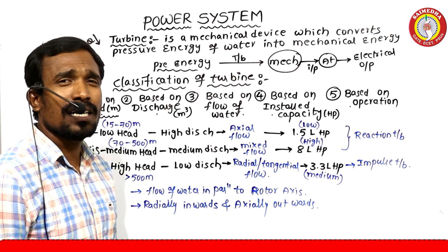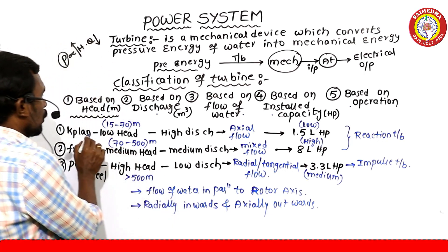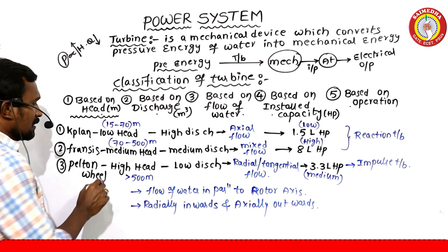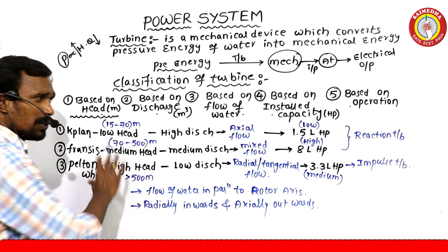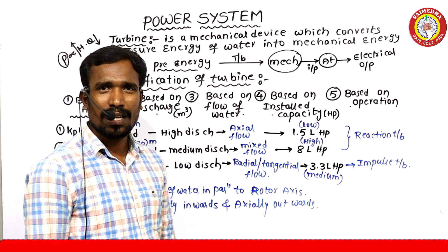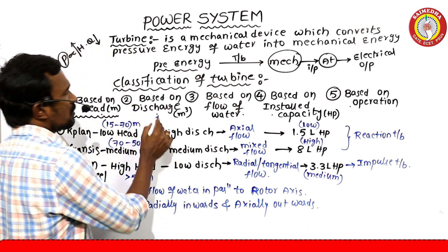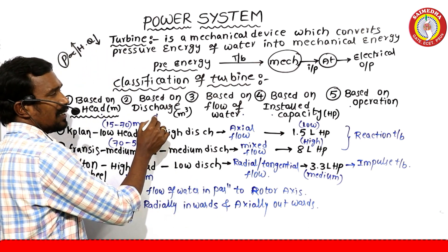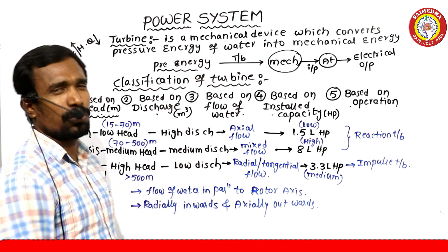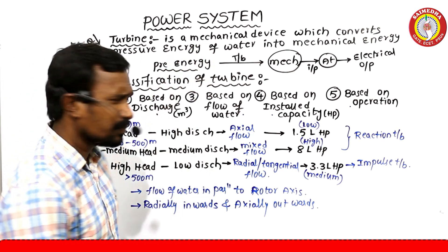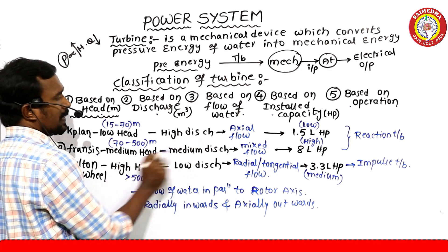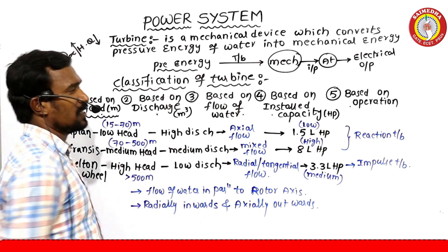Summary: Low head — Kaplan, Medium head — Francis, High head — Pelton Wheel. For discharge: low head gives high discharge, high head gives low discharge, and medium head gives medium discharge.